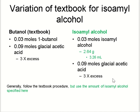For the experiment using isoamyl alcohol: take 2.64 grams or 2.7 mL of isoamyl alcohol, which is 0.03 moles, and take three times excess of glacial acetic acid. We already discussed why we need an excess amount of acetic acid — it is cheapest and it helps the reaction move forward to get more of our desired product.